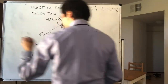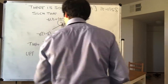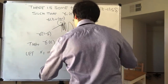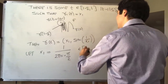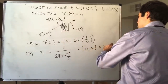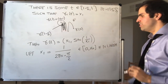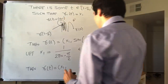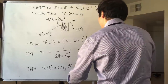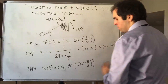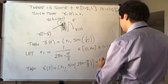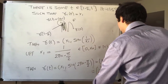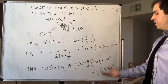We want to find an x₁ such that sine(1/x₁) = −1. More precisely, let x₁ = 1/(2πn − π/2). This lies in (0, x₀) for n large, because it goes to zero as n → ∞. Then γ(t) = (x₁, sine(1/x₁)) = (x₁, sine(2πn − π/2)) = (x₁, sine(−π/2)) = (1/(2πn − π/2), −1).